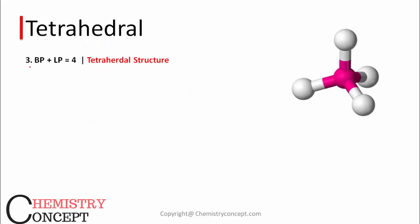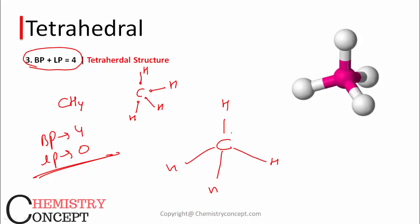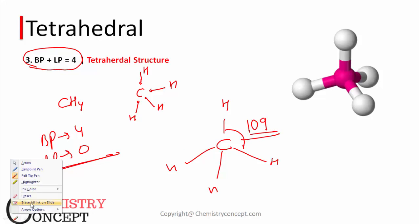Next is tetrahedral — the case when bond pair plus lone pair is 4. Example: CH4. Carbon has 4 electrons, and all 4 are used to form 4 single bonds with hydrogen atoms. Bond pair is 4, lone pair is 0. The structure is tetrahedral — a carbon atom with 4 hydrogen atoms on the corners of a tetrahedron with a bond angle of 109 degrees.